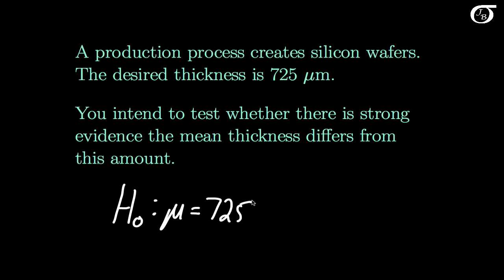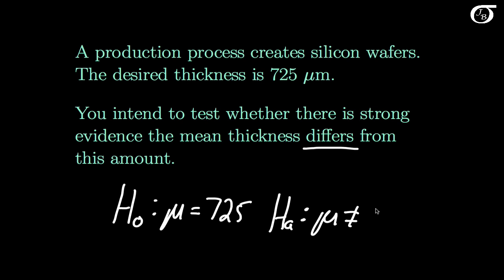But we care about a difference in either direction — we don't want them to be too thick or too thin. So we're seeing if there's strong evidence that it's different from that amount, and so we will use a two-sided alternative hypothesis that the true mean thickness is different from 725 micrometers.